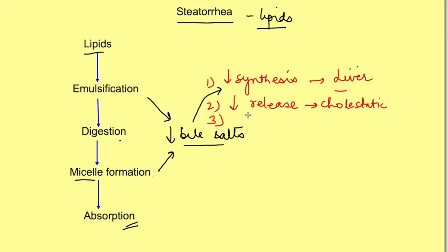Then there can be decreased enterohepatic circulation of the bile salts. Most of the bile salts are reabsorbed back in the terminal ileum. If there is a resection of the ileum that will also lead to steatorrhea. There can be an inflammatory disease of the small intestine, so sometimes Crohn's disease will also lead to steatorrhea.